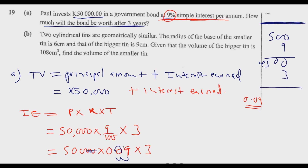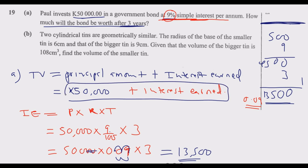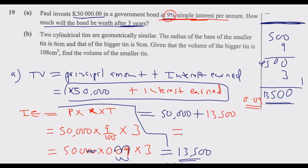So 500 multiplied by 9 gives 4,500, then multiplied by 3 gives 13,500. That is the interest earned. An alternative would have been to multiply 50,000 by 9 directly and then multiply by 3, but that takes more time. Now the total value becomes 50,000 plus 13,500, which gives 63,500.